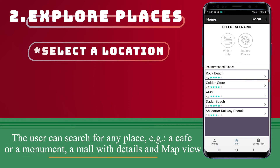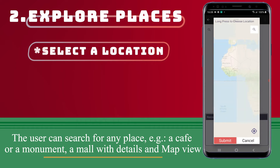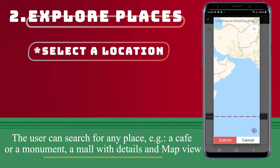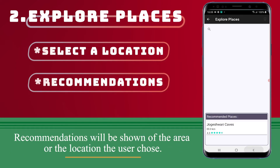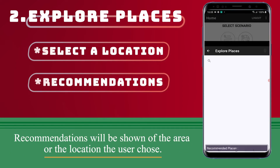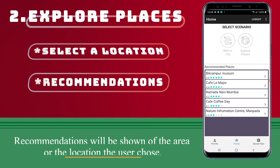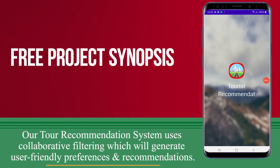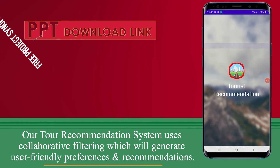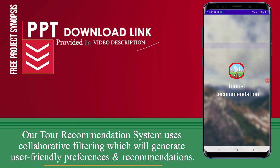The user can search for any place — for example, a cafe, a monument, or a mall — with details and a map view. Recommendations will be shown for the area or location the user chose. Our recommendation system uses collaborative filtering, which will generate user-friendly preferences and recommendations.